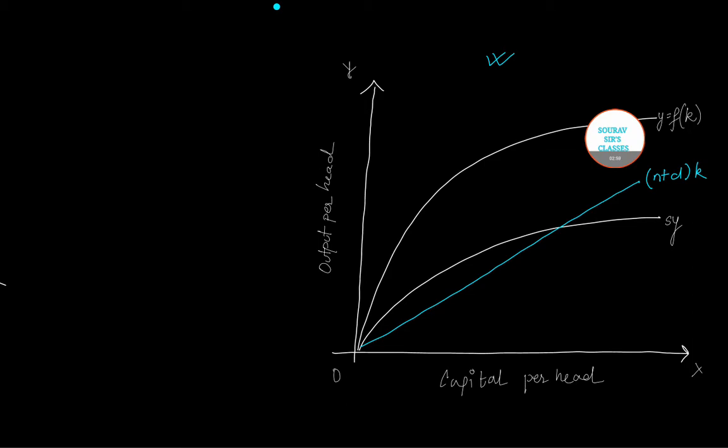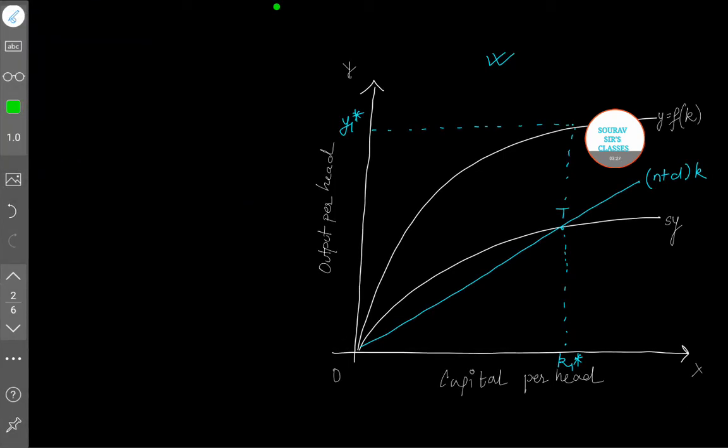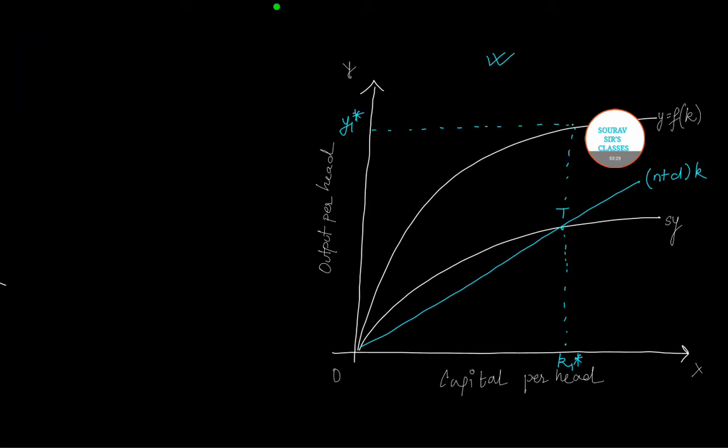This is my initial population line, so this is (n+δ)k. Now with this line, if this is the initial, let me mark the point. This is t, and this is k₁*, I'll extend this to y = f(k), the production function output per worker, so this will give me y₁*.